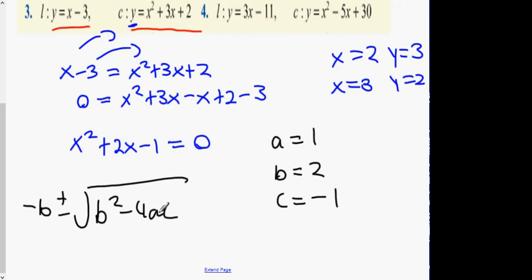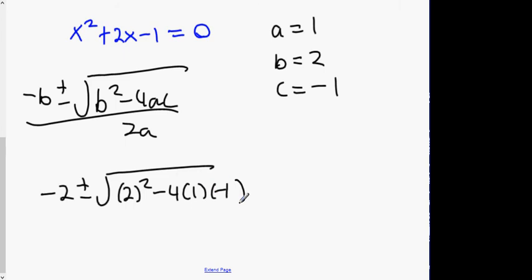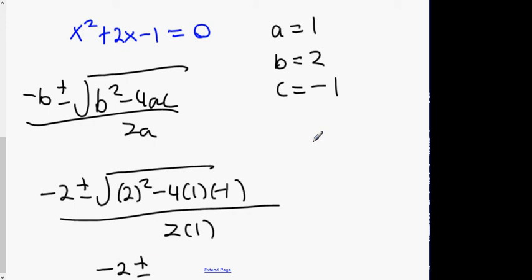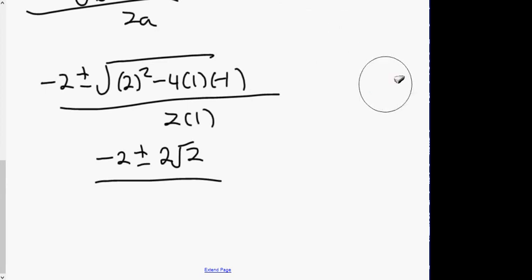Applying the formula: minus b plus or minus the square root of b squared minus 4ac, all over 2a. That gives minus 2 plus or minus the square root of 2 squared minus 4 times 1 times minus 1, all over 2 times 1. That's minus 2 plus or minus the square root of 4 plus 4, which is square root of 8, equal to 2 root 2. But wait — there's a mistake there.